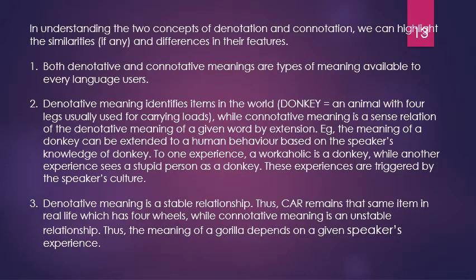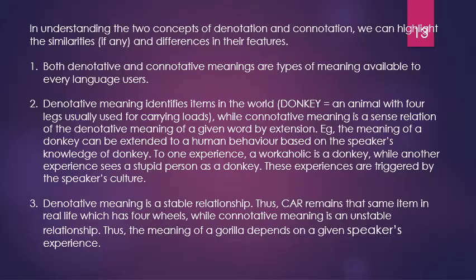In understanding the two concepts of denotation and connotation, we can highlight the similarities and differences. Number one: both denotative and connotative meanings are types of meanings available to every language user — inasmuch as they have some level of proficiency in the language, they have both denotative and connotative meaning. Number two: denotative meaning identifies items in the world — that is, the primary reference of words. For example, 'donkey' — we say an animal.